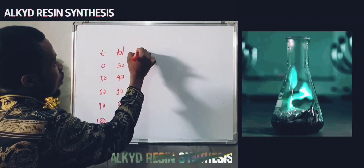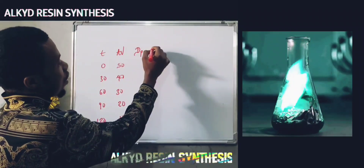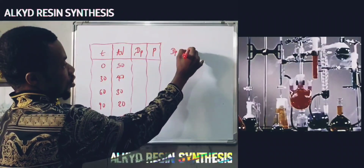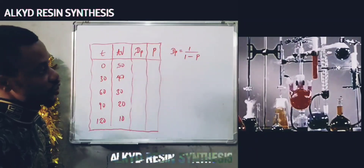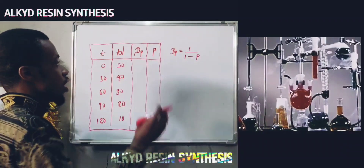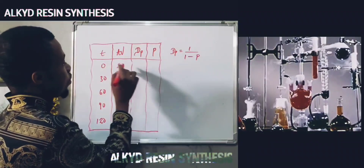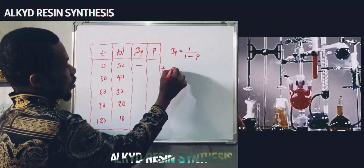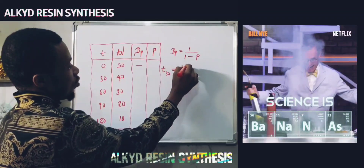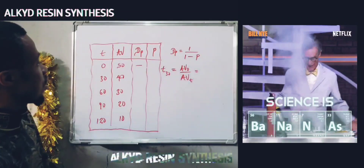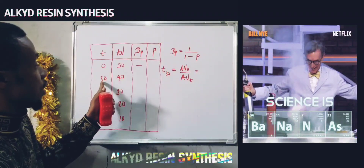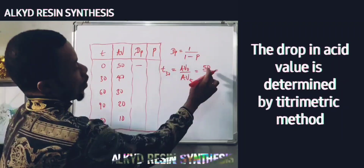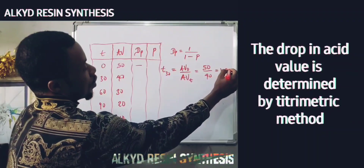Now, how do we calculate the degree of polymerization? At time 0, no polymerization has taken place, so we put a dash. At time 30 minutes, the degree of polymerization equals the initial acid value divided by the acid value at time T: that is 50 divided by 40, which gives us 1.25. So the degree of polymerization at 30 minutes is 1.25.